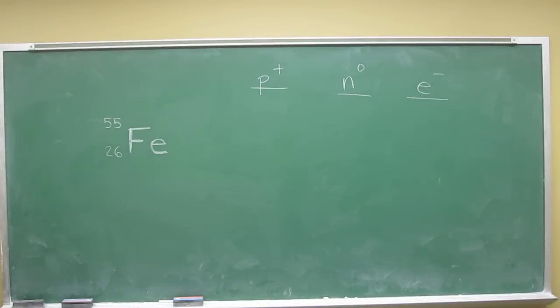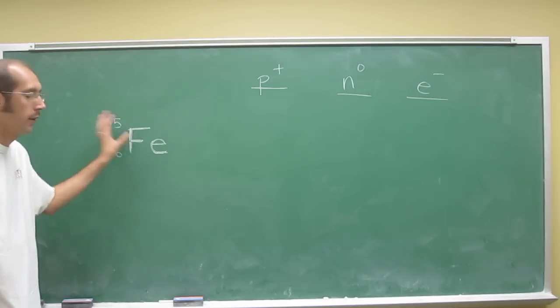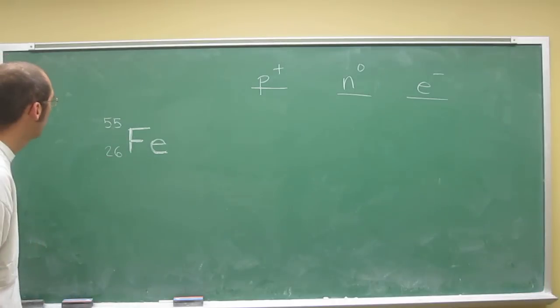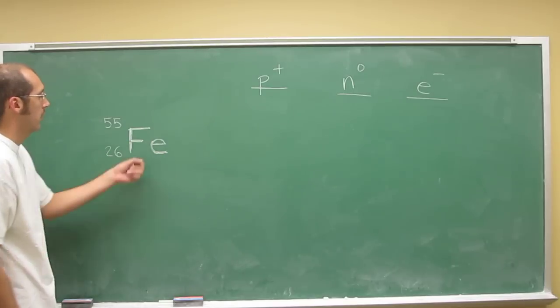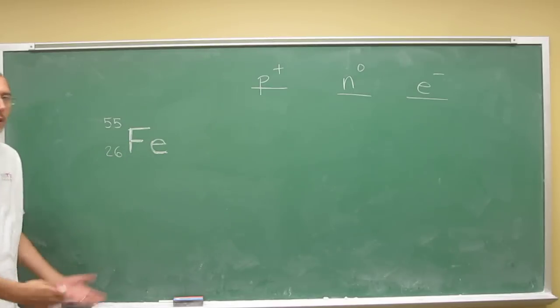So, iron 55, you're going to have to remember if it's not written for you, like I wrote it up here for you, how to write it. So iron's atomic symbol isn't I or IR or anything, it's Fe.